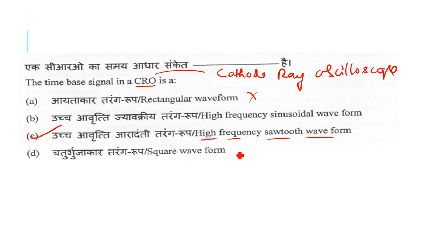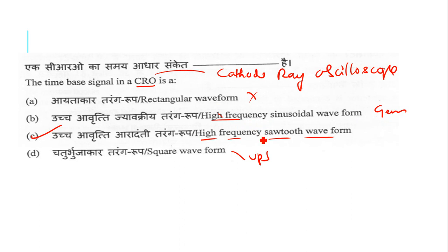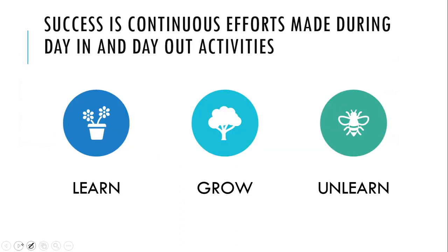Other options include rectangular waveform, square waveform, and high-frequency sinusoidal waveform. A sinusoidal generator operates at power frequency — 50 Hz or 60 Hz — not high frequency. High-frequency signals include radio waves and microwaves. But for a CRO, the time-based signal is specifically the sawtooth waveform. That is the correct answer.